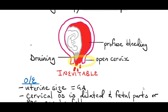Now if you look at the diagram here, you find that there is an open cervix - there's dilatation of the cervix. There is profuse pervaginal bleeding, or there might be draining, meaning that the fetus is almost about to come out because the cervix is dilating.